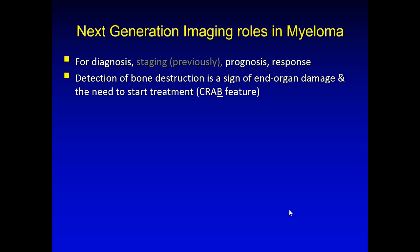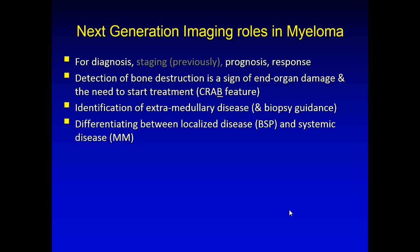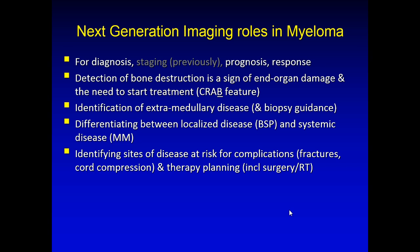Previously these tools were used for staging also. Next generation imaging tools can now be used to detect bone destruction, which is a sign of end organ damage and the need to start treatment — this is the B (bone involvement) of CRAB. Next generation imaging can also be useful for the detection of extramedullary disease and to guide biopsies if necessary. These technologies can also be used to differentiate localized disease, solitary plasmacytomas, from systemic disease involving more than one lesion. New generation technologies can also identify areas at risk for complications such as fractures and cord compressions, and to plan therapy, including surgery, kyphoplasty, radiotherapy, etc.